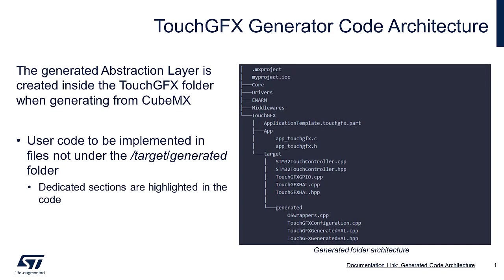CubeMX will create a TouchFX folder for a project as seen in this screenshot. The folder always contains the same files regardless of configuration, while the content of those files changes according to CubeMX and user configuration. Thanks to the hierarchy of the hardware abstraction layer, files not listed under the generated folder can be modified with user code in the dedicated zones for further configuration. For example, you can allocate space for a third frame buffer called animation storage to enable complex animations in your project.